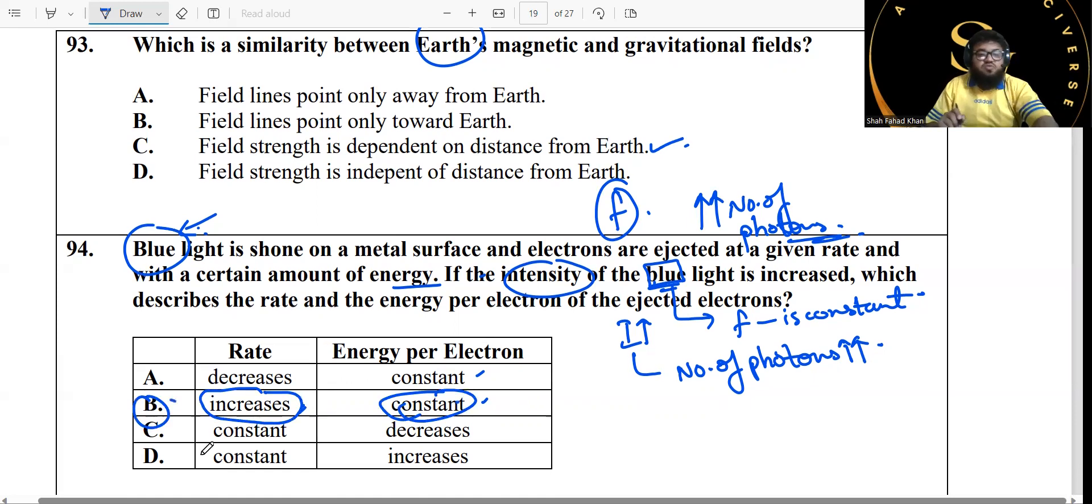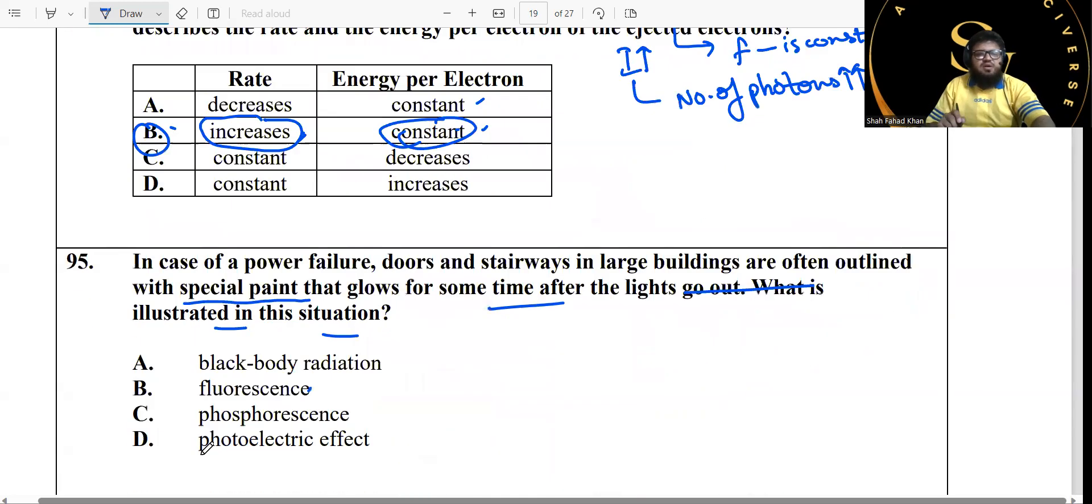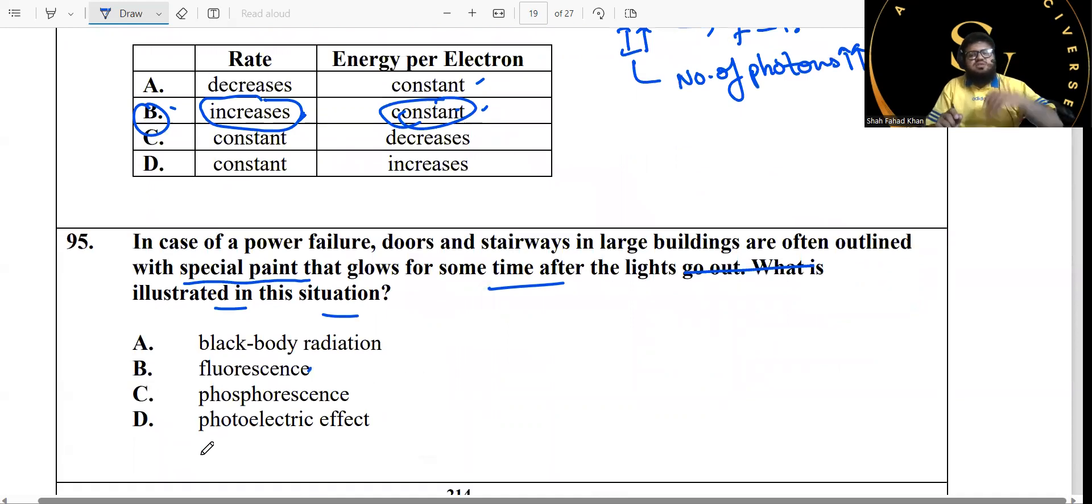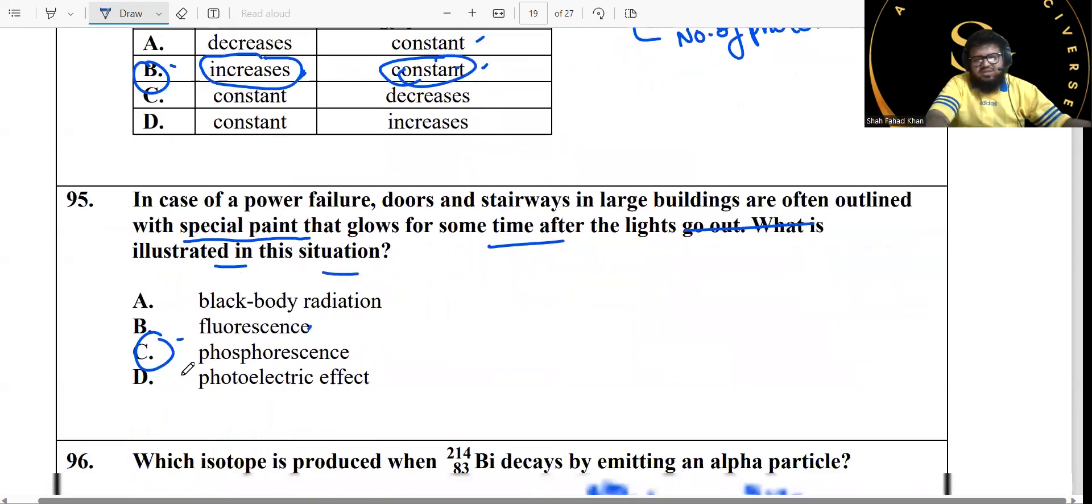Let's move on to 95. In case of power failure, those in stables and large buildings are open outline with special paint that glows for some time. This is called photophosphorescence.